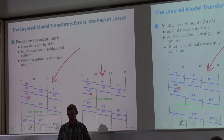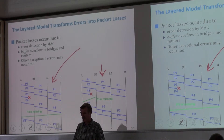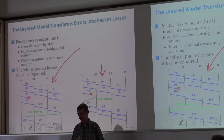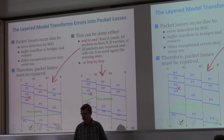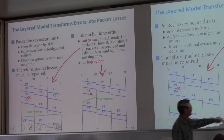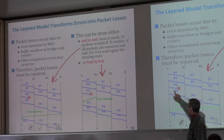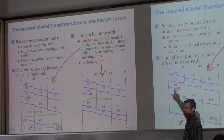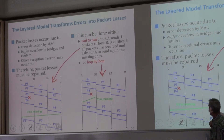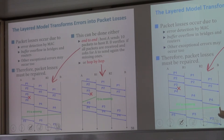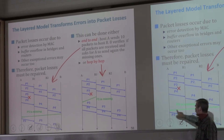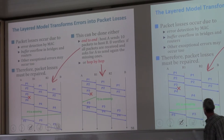There are essentially two ways to do it. It can be done hop by hop or end to end. Hop by hop means I'll assume this packet is lost — P3 is sent over some MAC layer mechanism. If I do the end to end retransmission, which is what I do with TCP, I will detect that the packet is missing when something happens. And then we retransmit it.